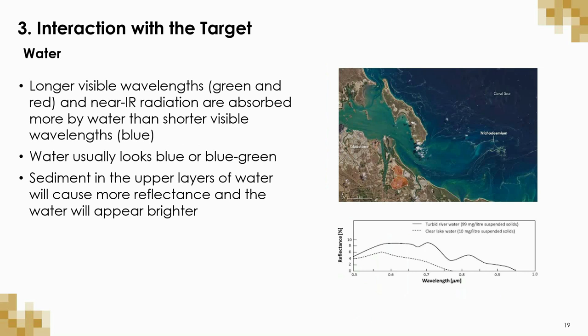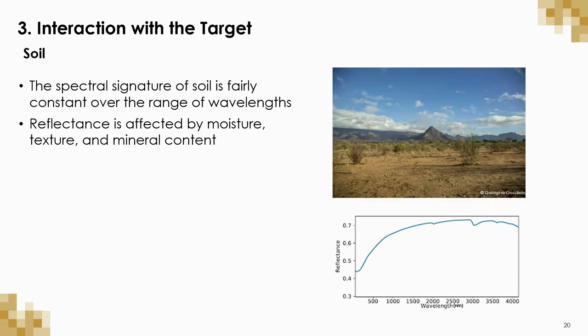Water, on the other hand, will absorb more long wavelength light such as infrared, red, and green light, and reflect shorter wavelengths like blue. This is why water will normally look bluish. Settlements and minerals in the water will affect the way that light interacts and therefore change the water's appearance. Soils interact fairly constantly across many wavelengths of light, which gives it its characteristic brown color. Soil reflectance is affected by many factors, though, like moisture, texture, and mineral content.